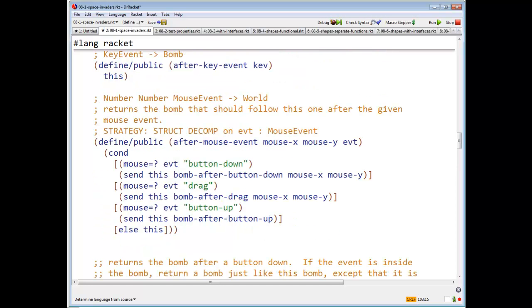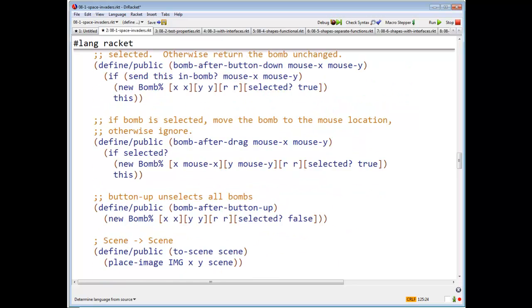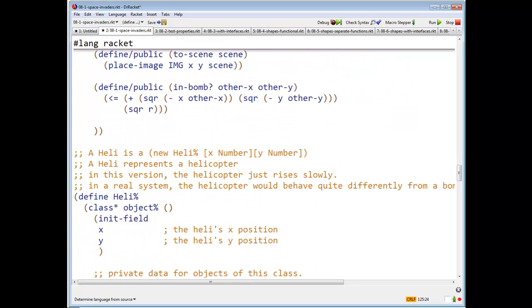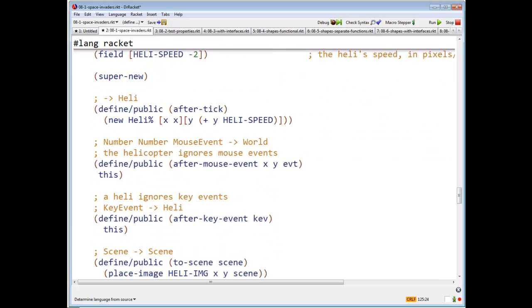In Racket, there are no static fields, there are no static methods, which is occasionally annoying. And there's a helicopter, same story, one more time.